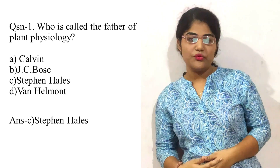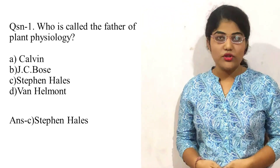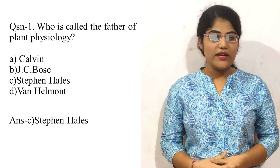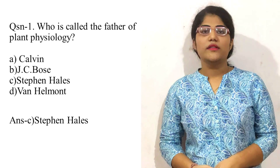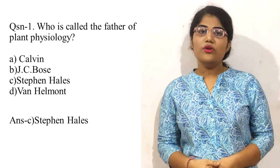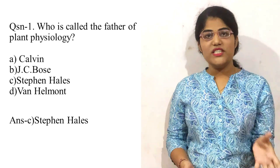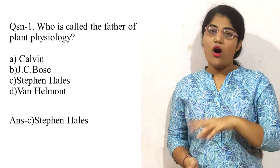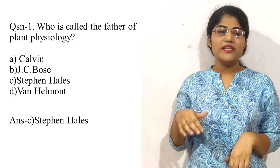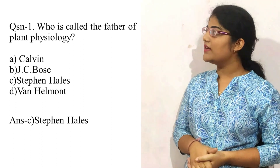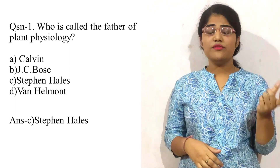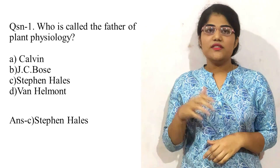Question number one: who is called the father of plant physiology? The options are: option A is Calvin, option B is Jagdish Chandra Bose, option C is Stephen Hales, and option D is Van Helmont. I already discussed about these points in my first class. The correct answer is option number C, that is Stephen Hales.